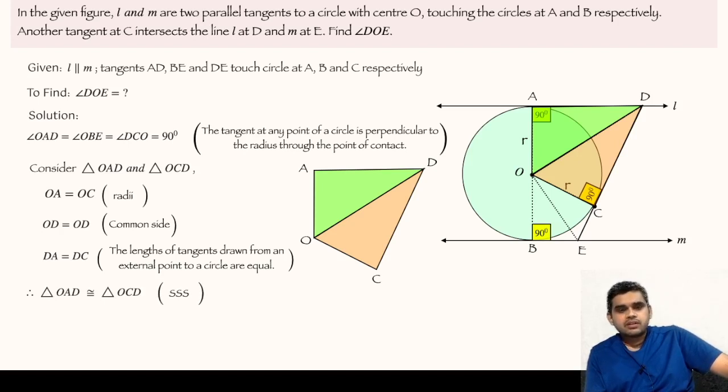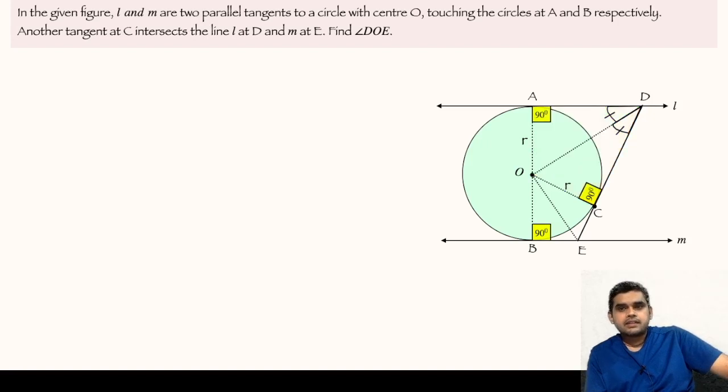Because we know that congruent parts of congruent triangles are proportional or equal, for example, we can say that angle ADO is equal to angle CDO. Let us mark it in the diagram. These two angles are equal.